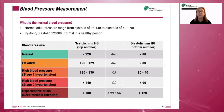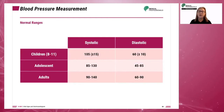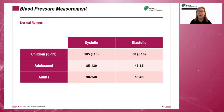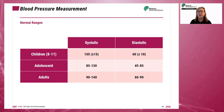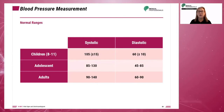Hypotension is generally desirable unless it is accompanied by clinical symptoms. The normal range for blood pressure varies by age. Children aged 8 to 11 have a systolic range of 105 plus or minus 15 and a diastolic range of 60 plus or minus 10. Adolescent children have a systolic range of 85 to 130 and a diastolic range of 45 to 85. Adults have a systolic range of 90 to 140 and a diastolic range of 60 to 90.